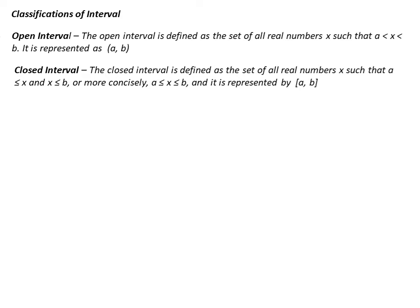And for our second classification, we actually have the closed interval. The closed interval is defined as the set of all real numbers x, such that a is less than or equal x, and x is less than or equal b. Or more concisely, a is less than or equal x, and less than or equal b. And it is represented by a and b inside brackets.